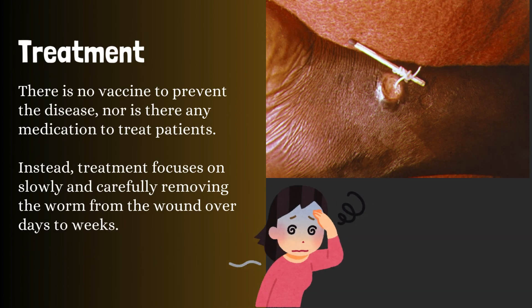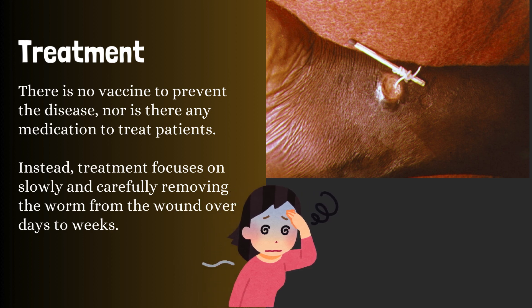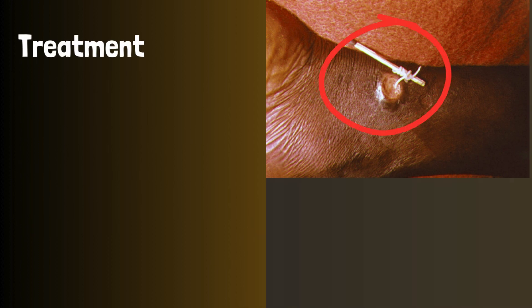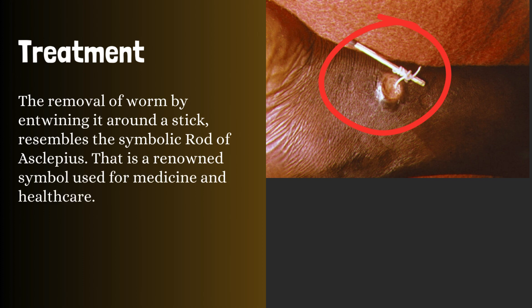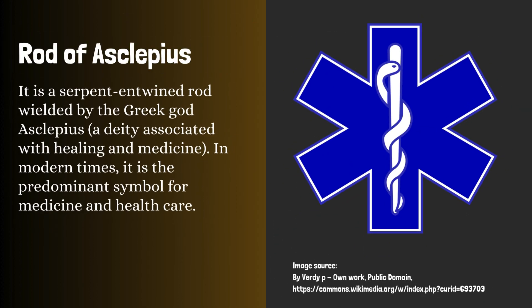Treatment: there is no vaccine to prevent the disease, nor is there any medication to treat patients. Instead, treatment focuses on slowly and carefully removing the worm from the wound. Over days to weeks, the removal of the worm by entwining it around a stick resembles the symbolic rod of Asclepius — a renowned symbol used for medicine and healthcare. The rod of Asclepius is a serpent-entwined rod wielded by the Greek god Asclepius, a deity associated with healing and medicine. In modern times, it is the predominant symbol for medicine and healthcare.